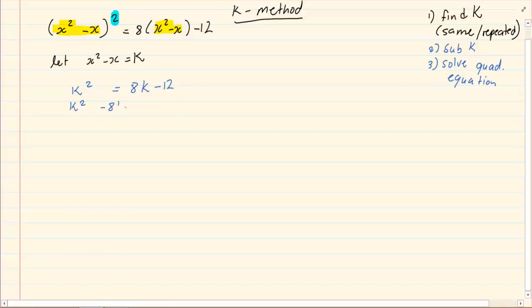K² - 8K + 12 = 0. (K - 6)(K - 2) = 0. K = 6, K = 2.